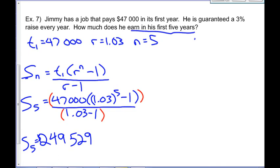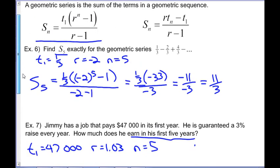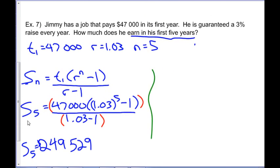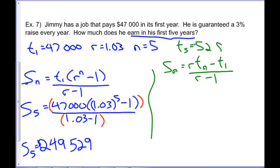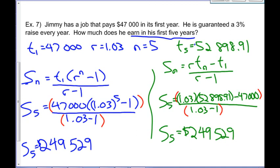If we had wanted to use the other formula — Sn = (r × tn - t1) / (r - 1) — we could, since we found t5 = $52,898.91 earlier. Either formula works; which one you use depends on what information you know.